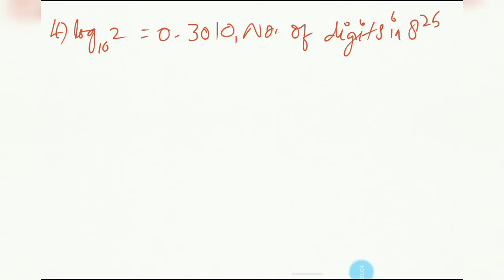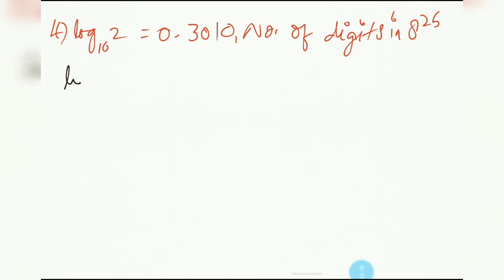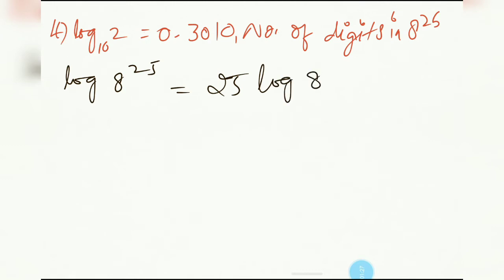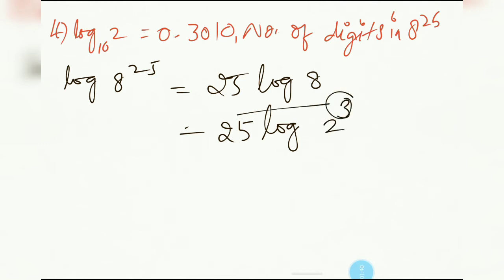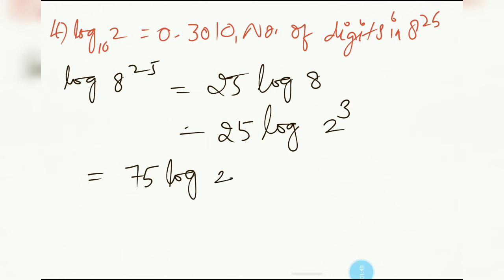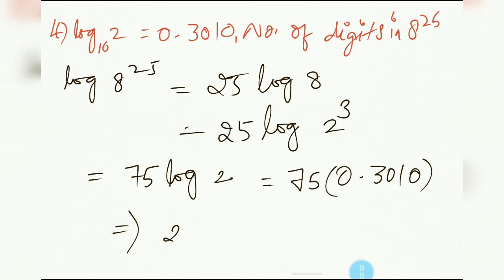Fourth question: log 2 = 0.3010 is given, and we have to find the number of digits in 8 to the power 25. So log(8^25) = 25 log 8. Since 8 = 2^3, this becomes 25 × 3 × log 2 = 75 log 2. Substituting: 75 × 0.3010. The final answer is 22.575.